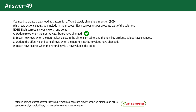Option D — insert new records when the natural key is a new value in the table. When a new data entry comes in with a natural key that doesn't yet exist in the dimension table, we need to add it as a new record. This action isn't about managing changes to existing data, but is crucial for adding new elements into the database. Thus, this is a correct answer choice.